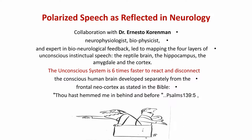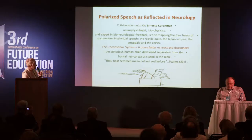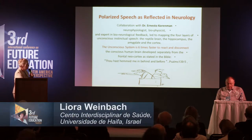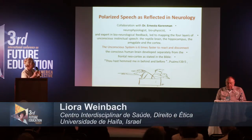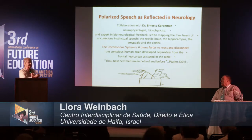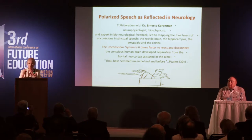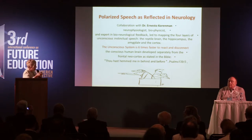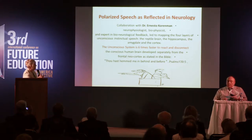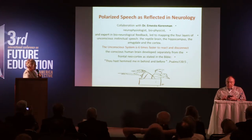The reptilian brain, the hippocampus, the amygdala, and the cortex — the unconscious. Here is the problem, here is the point: the unconscious system is six times faster to react, and it disconnects us from all our values and from all our humane intelligence. This system is connected to the neo-cortex, the frontal lobe, connected with our heart, also with our morality and ethics.